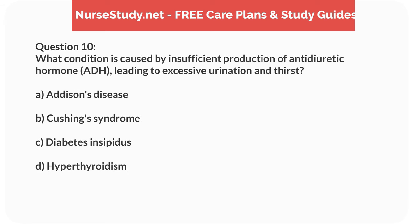Question 10. What condition is caused by insufficient production of antidiuretic hormone (ADH), leading to excessive urination and thirst? A. Addison's disease. B. Cushing's syndrome. C. Diabetes insipidus. D. Hyperthyroidism.